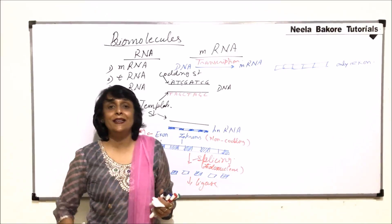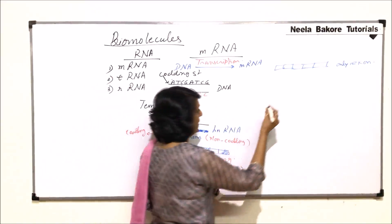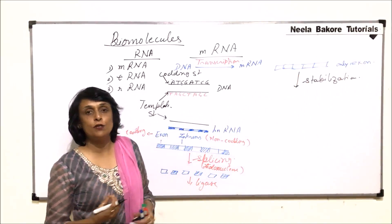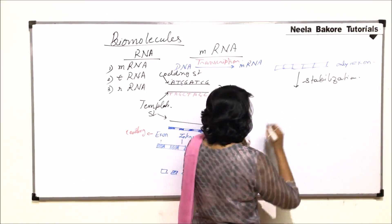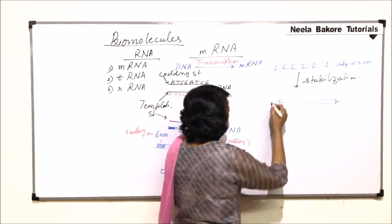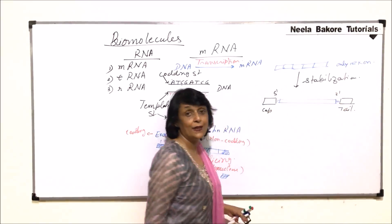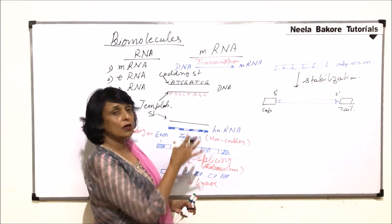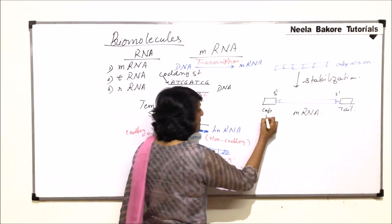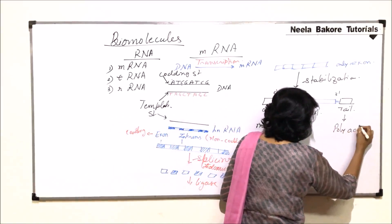Can we call it mRNA now? We cannot because it is a highly unstable molecule. It has to be stabilized. So here there is stabilization which takes place. In stabilization there is a cap and a tail which is added. So if this is our complete exon-exon joint part on the fifth end towards the fifth prime a cap is added and towards the third prime a tail is added. After capping and tailing now the structure becomes stable and we start calling it mRNA. The cap is made up of methylated guanine and tail is made up of polyadenine.